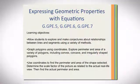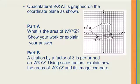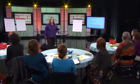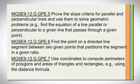The task we're looking at right now addresses GPE 5, GPE 6, and GPE 7. Here's our quadrilateral WXYZ. In part A, we're going to look at the area of the quadrilateral, show our work, and explain our answers. In part B, we'll perform a dilation by a factor of 3 and explain how the areas of WXYZ and its image compare. We added GPE 6 to this task because we want to extend it a little bit further and do an example of partitioning a segment.